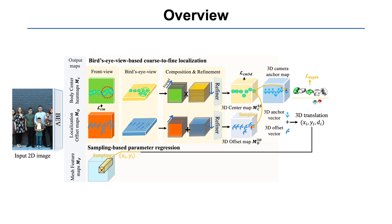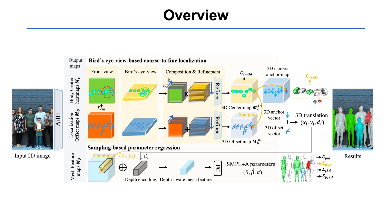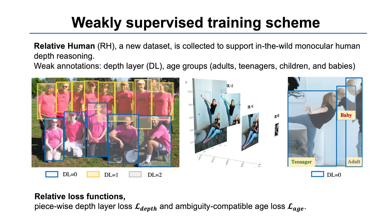Then we use the estimated 3D translation to sample the mesh feature map at position XY. We encode the estimated depth and add it to the sampled mesh feature vector. Finally, we regress the SMPL-A parameters from the combined feature vector.